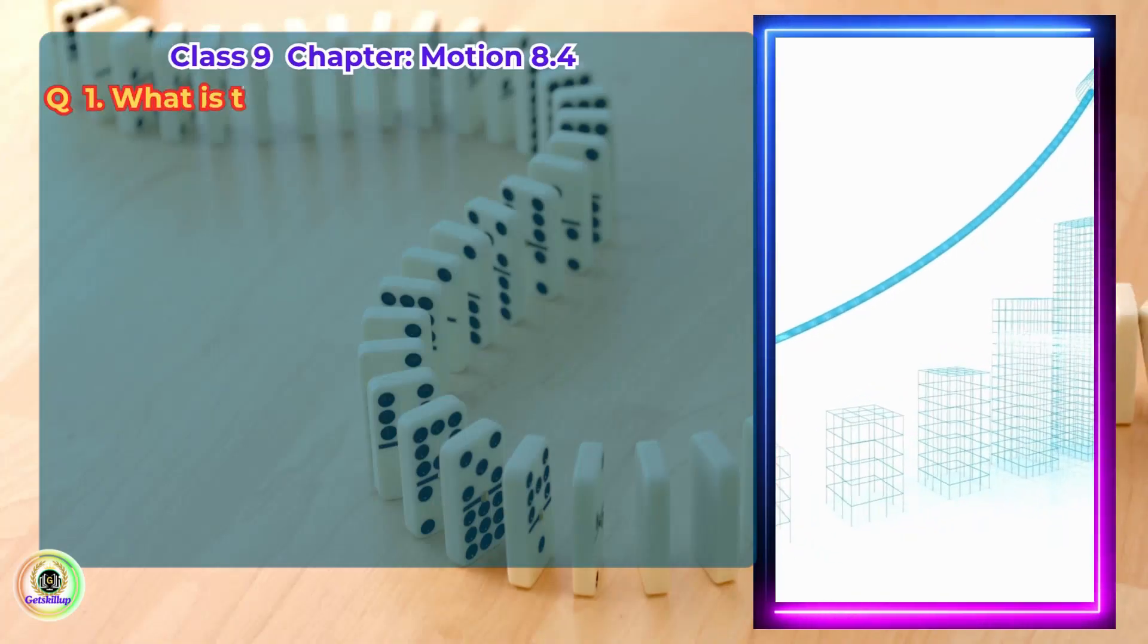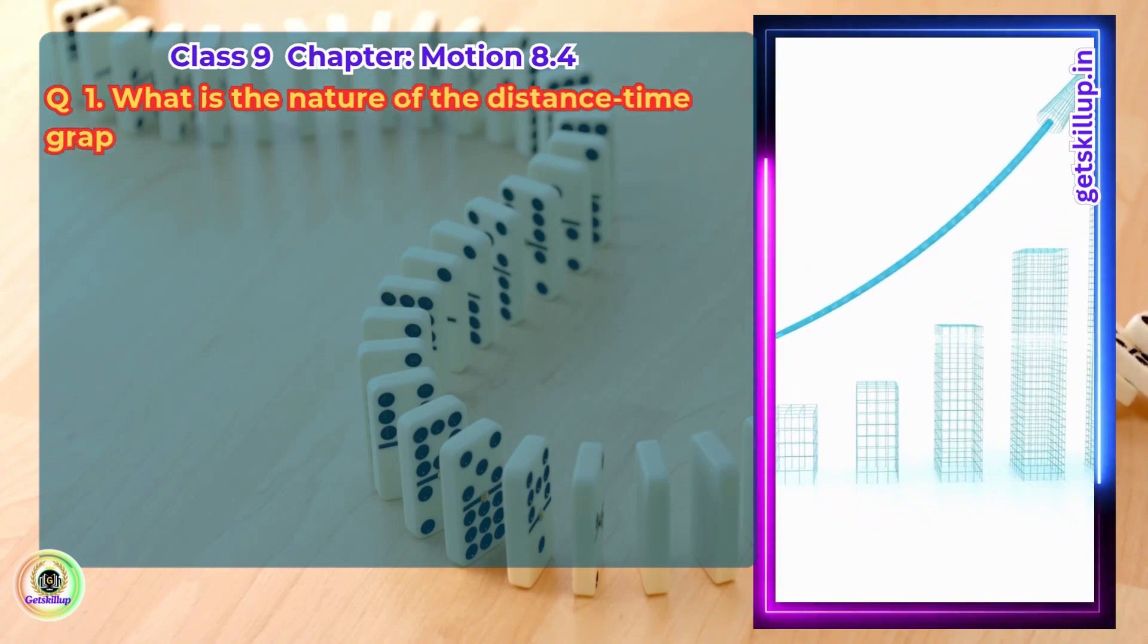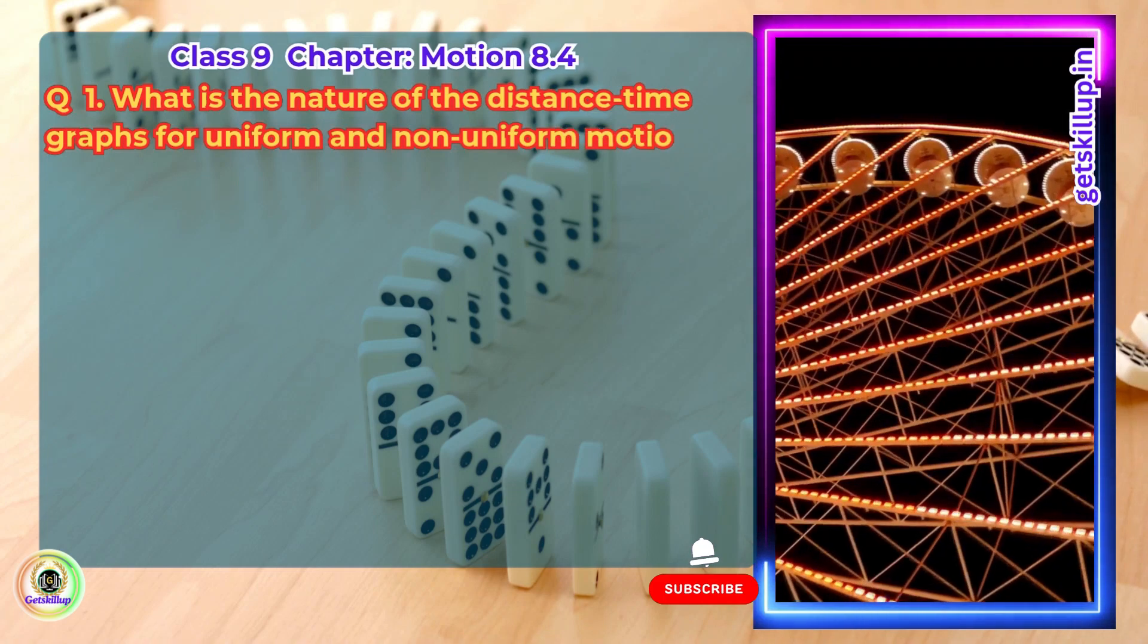Question 1. What is the nature of the distance-time graphs for uniform and non-uniform motion of an object?